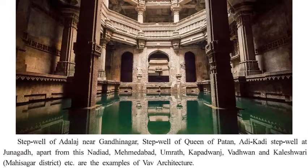The step well of Adalaj near Gandhinagar, the Rani ki Vav in Patan, and the Adi Kadi Vav step well at Junagadh are notable examples. Apart from these, Nadiad, Mehmadabad, Umrat, Kapadwanj, Vadavan, and Kalashwari districts also have step wells — the Vav architecture.